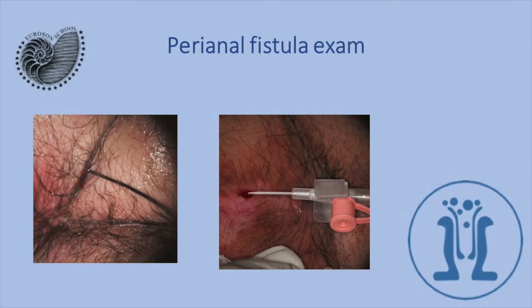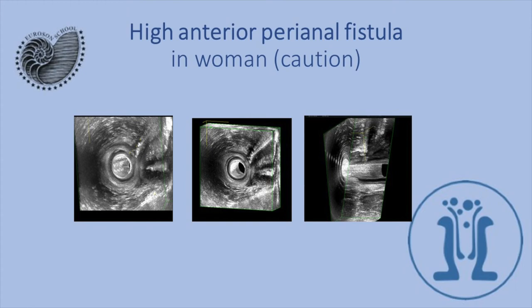Here we see a high anterior fistula in a woman examined vaginally. Here is the fistula in the anterior position, and here is the posterior position — here is the fistula. It is a very dangerous fistula: if we use the common operation of laying open the fistula, this woman would be left with very severe fecal incontinence.